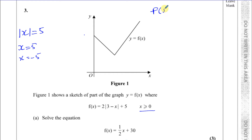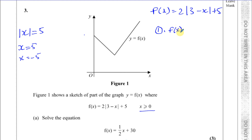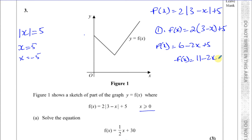The function f(x) = 2|3 − x| + 5 has two branches. For the first branch, we treat the inside as positive: f(x) = 2(3 − x) + 5 = 6 − 2x + 5 = 11 − 2x. So this part of the graph has a negative gradient and passes through 11 on the y-axis. The equation of this branch is y = 11 − 2x.